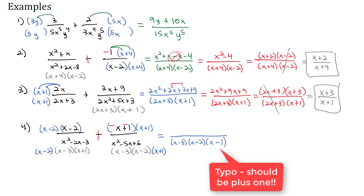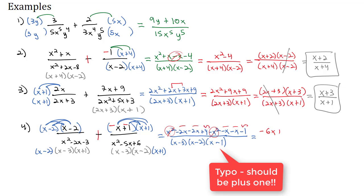In the numerator, multiplying out: x times x is x squared, minus 2x, minus 2x, plus 4. The second part is negative, giving minus x squared, minus x, minus x, and minus 1. Combining like terms: x squared minus x squared is 0; negative 2x, negative 2x, negative x, and negative x gives negative 6x; and plus 4 minus 1 is plus 3 — so the numerator is negative 6x plus 3 over the common denominator of x minus 3 times x minus 2 times x plus 1.